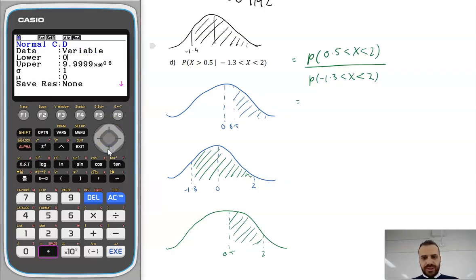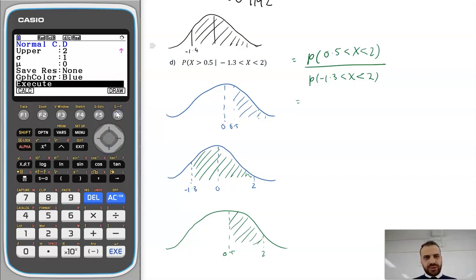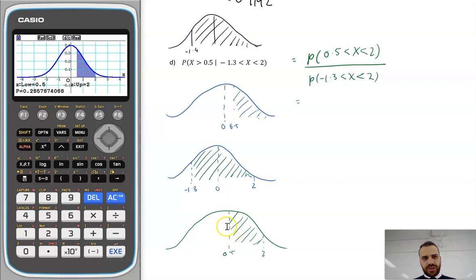So the first one, lower 0.5, upper 2. Now I haven't drawn it this time. I don't really have to draw them, but I do like to draw them to make sure that what I was thinking in my head is what I typed into my calculator. So 0.28587874.